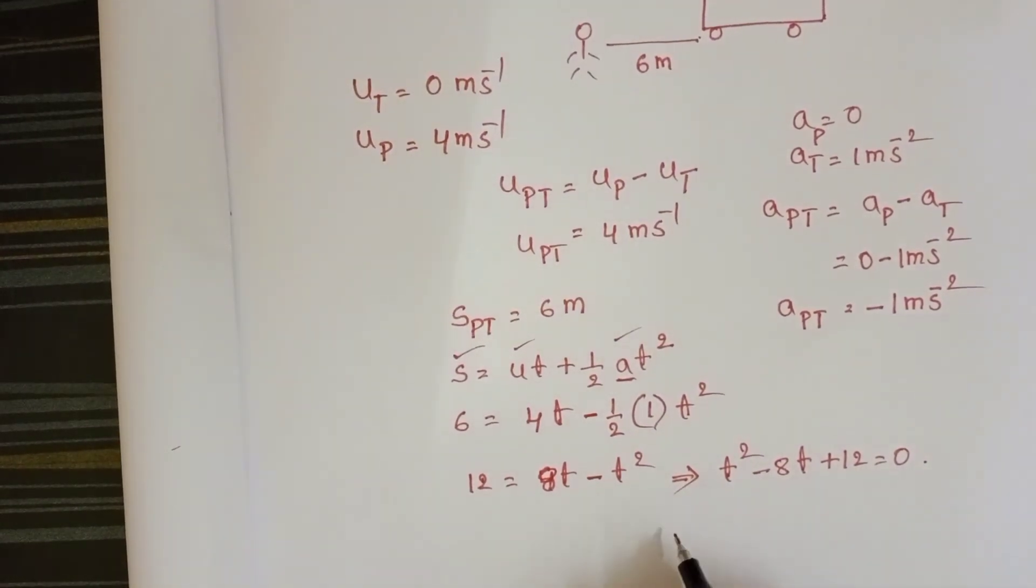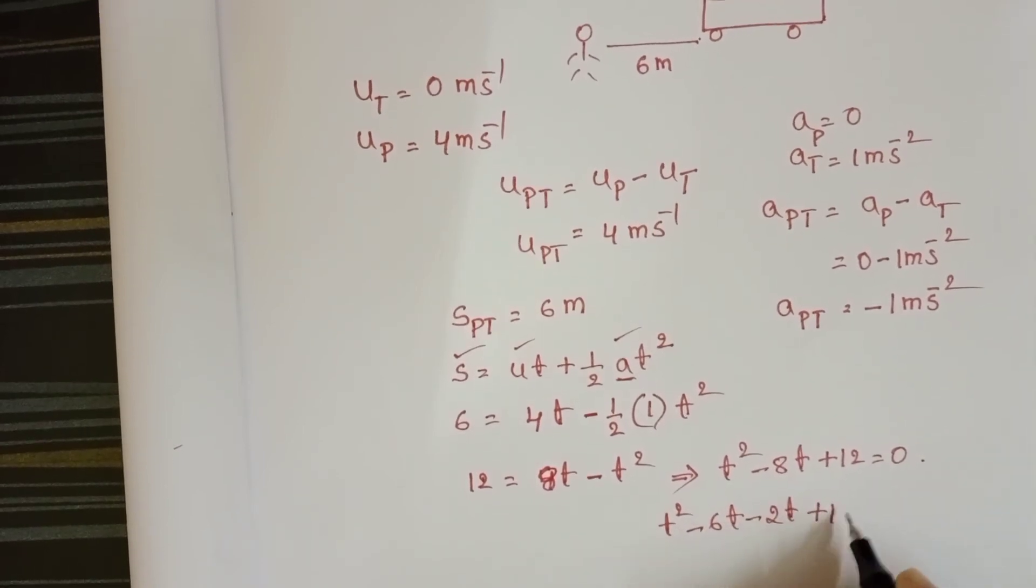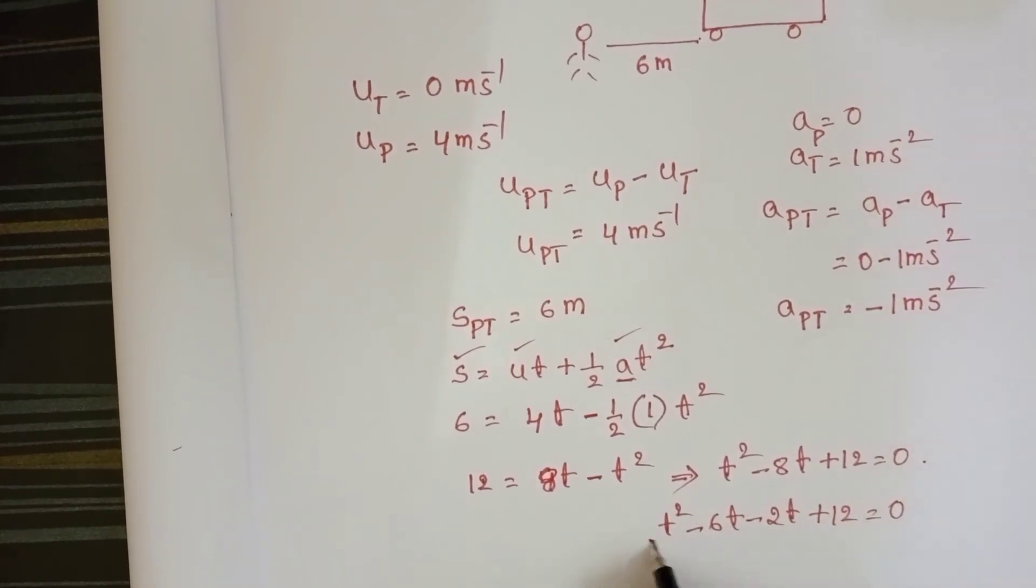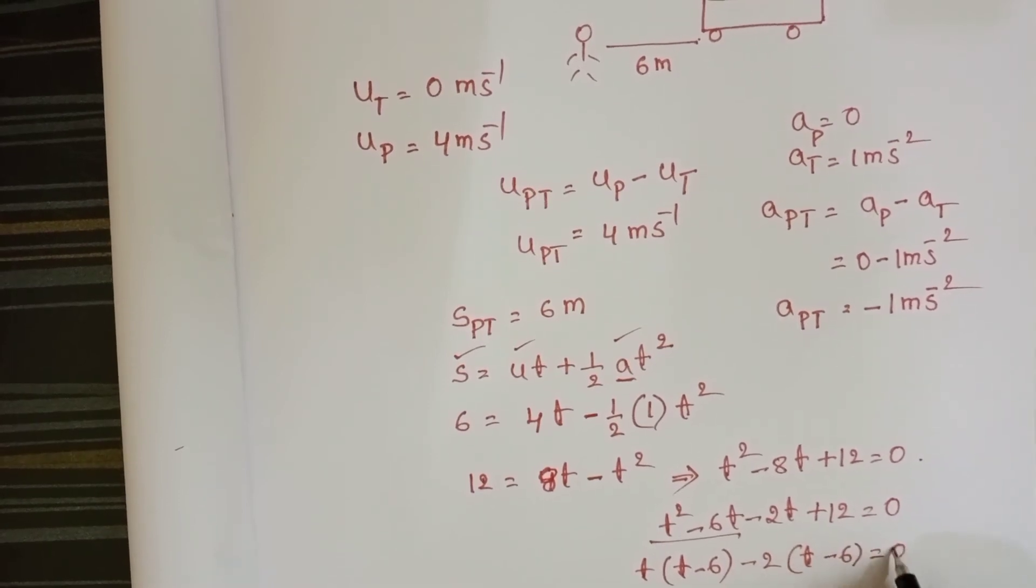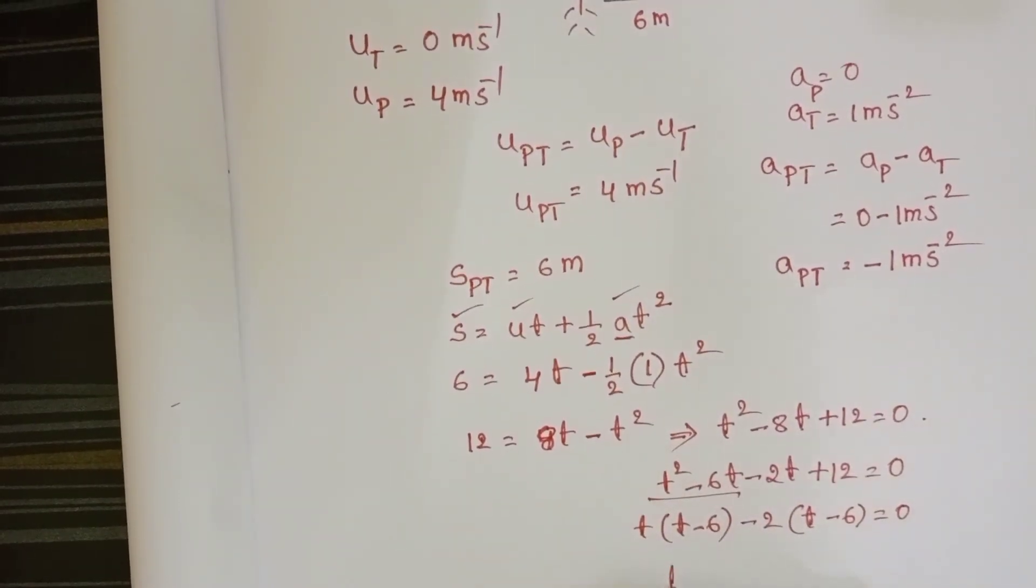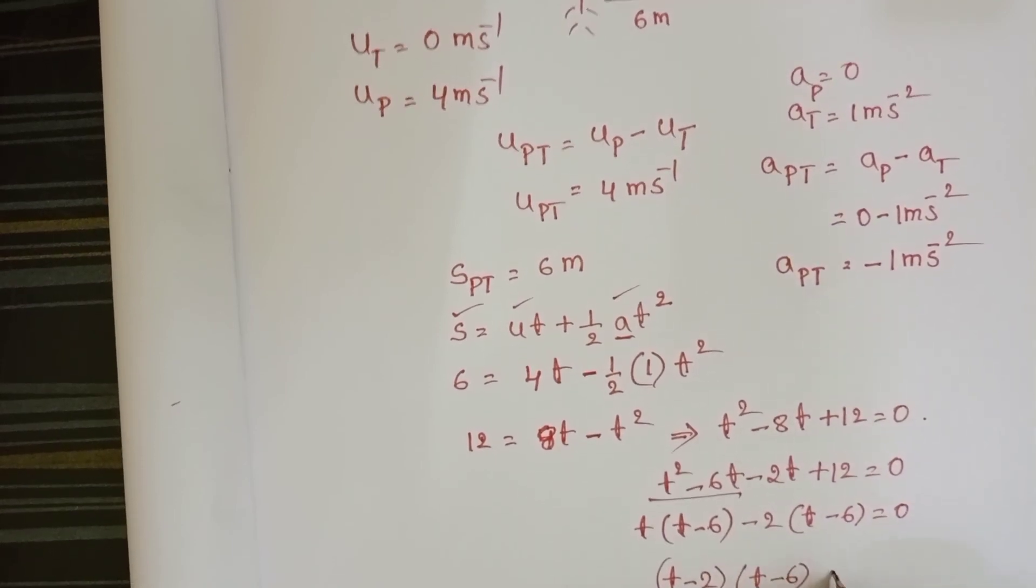Simplify this quadratic equation. T squared minus 6t minus 2t plus 12 is equals to 0. Take t common: t minus 6, minus 2 common: t minus 6 is equals to 0. So t minus 2 into t minus 6 is equals to 0.